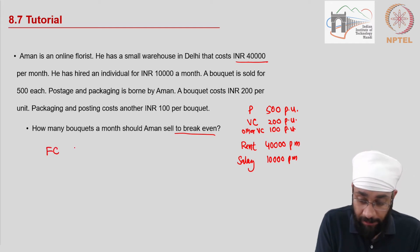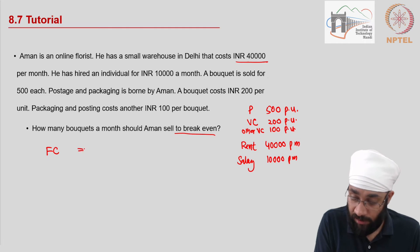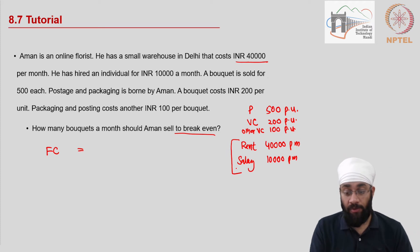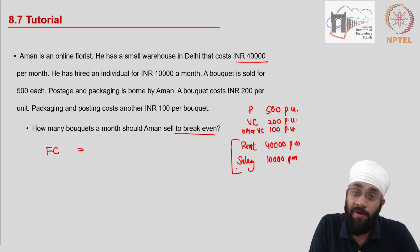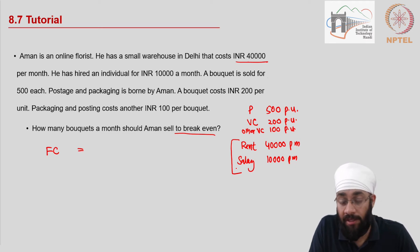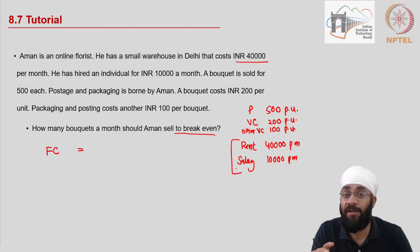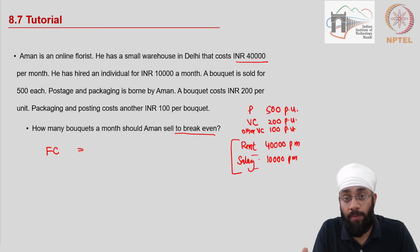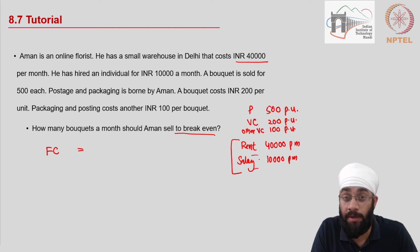What is the fixed cost in the month? The fixed cost in the month is the rent and the salary. Any name can be given to the fixed cost, but you need clarity on which costs are fixed within that duration of time. The key point is these things should not vary with respect to quantity.